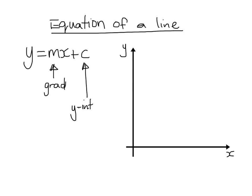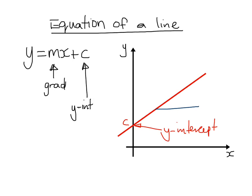Let's say I was to plot myself a line — there's my line. A couple of things to note straight away: where the line cuts the y-axis, whatever number that is, that's my c — that's called my y-intercept. And we should know how to find the gradient of that line, which is the difference in y divided by the difference in x.